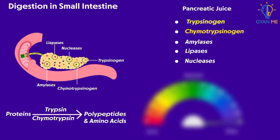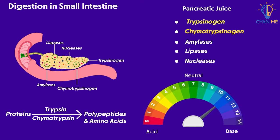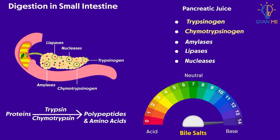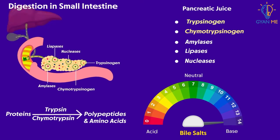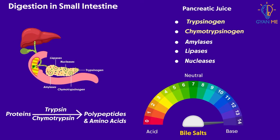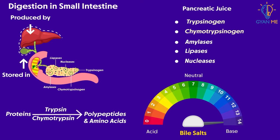Students, pancreatic juice requires basic pH to show its activity. This pH change from acidic to basic is brought about by bile salts. Bile salts, as you know, are produced by the liver and stored in the gallbladder. They are secreted into the small intestine to neutralize the acid coming from the stomach.